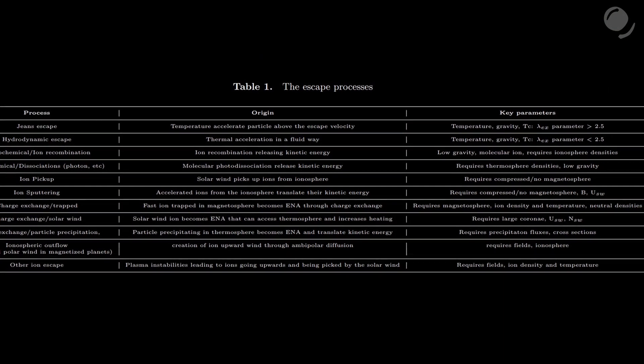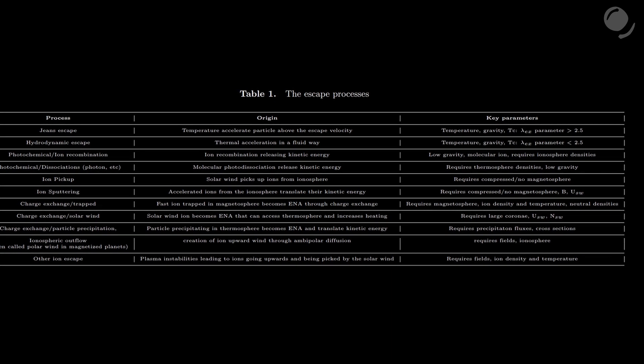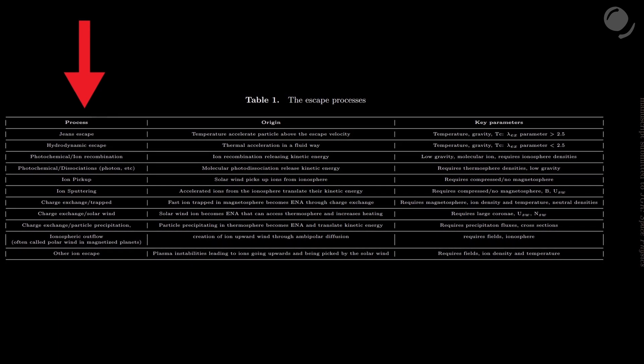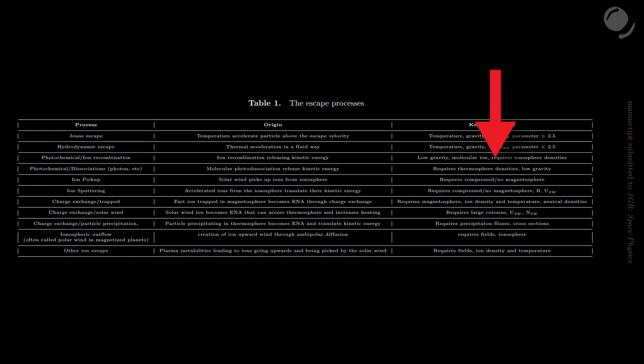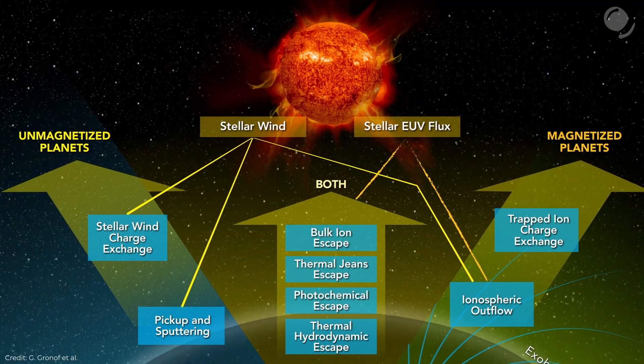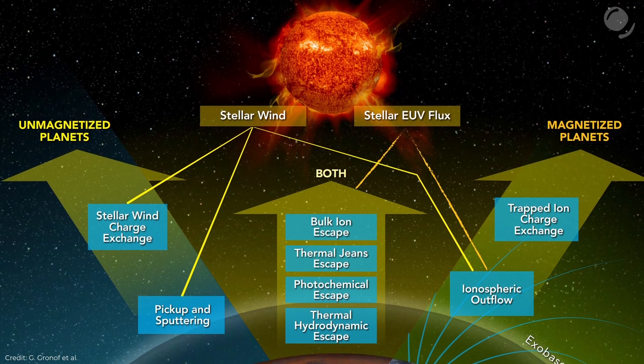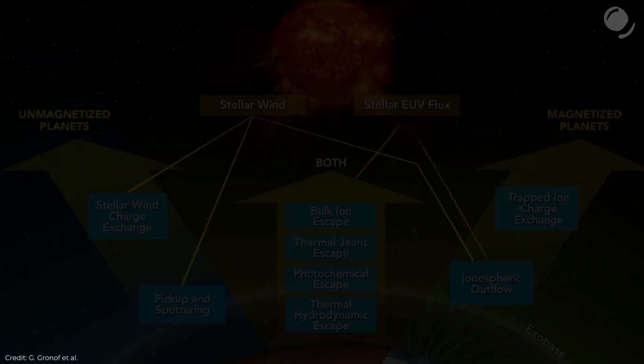And those of course are not all of the known processes and not all of the details. That's a table from one of the papers I used as a source. And we can see how many processes there are. And here we can see not all of them involve magnetic fields and the solar wind. So yes, magnetic field is important. It does protect us from some of the effects. But even Earth still loses its atmosphere via other processes.